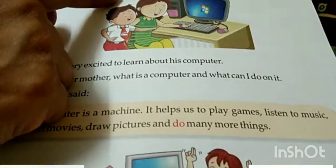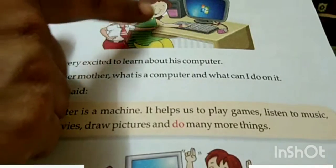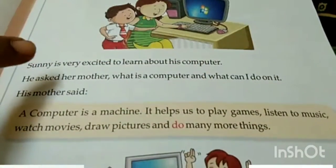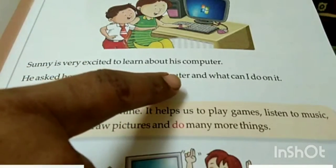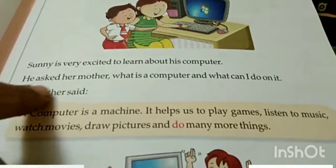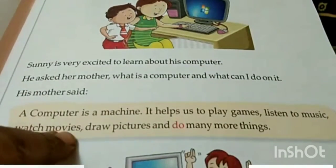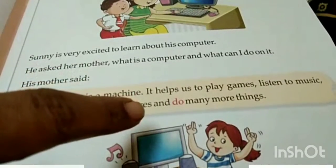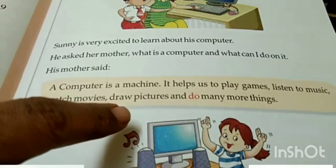Today is Sunny's birthday. His parents have brought a computer as his birthday gift. Aaj Sunny ka birthday toh uski mamma aur uske papa ne uske liye birthday gift mein computer laya. Sunny is very excited to learn about his computer. He asked his mother: 'What is a computer and what can I do on it?' His mother said: 'A computer is a machine. It helps us to play games, listen to music, watch movies, draw pictures and do many more things.'